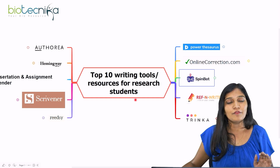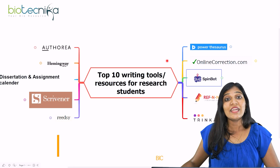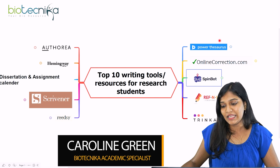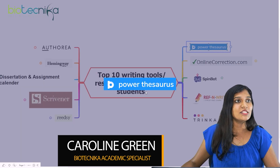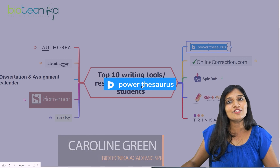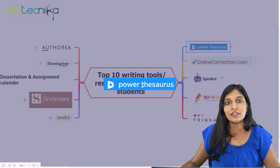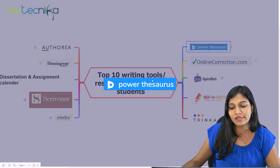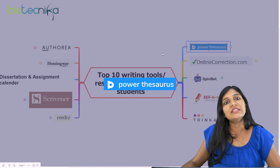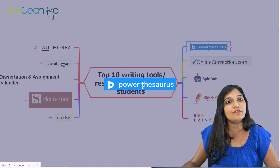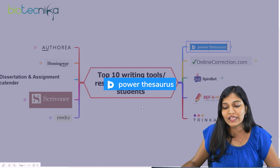Hey everyone, this is Caroline Green from Biotechnica. The first tool is Power Thesaurus. When you're going to start your research paper or any sort of manuscript for a journal, you need to know certain synonyms — whether in English or for scientific words. If you want synonyms for words, you can definitely use Power Thesaurus, which is available online.